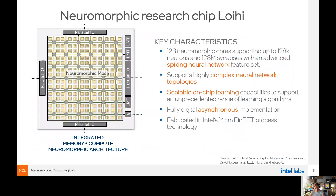In Loihi, these principles are implemented in hardware. Loihi consists of 128 neuronal cores, each simulating up to 1,000 neurons, with 128 million synapses overall and an advanced spiking neural network feature set. All parameters of the leaky integrate-and-fire model — as well as synapse temporal kernels — can be set by the user on chip. Loihi supports highly complex neuronal network topologies; we are not bound to feed-forward or convolutional networks. It also has scalable on-chip learning capability — because the learning rule is local, it runs in parallel across the chip very efficiently.